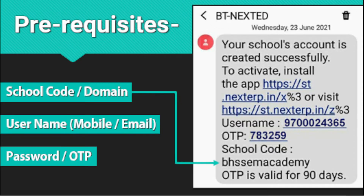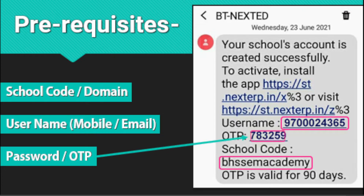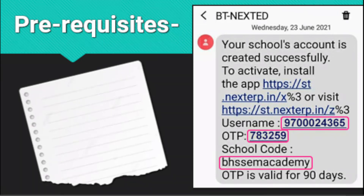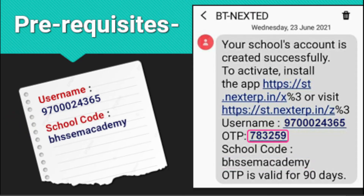So this is the school code, which is BHSSEM Academy. The username is your mobile number that you have given to register. The third information is the OTP, using which you will initially connect to create your parents' account. The next step is to take a paper and write down all three: the username, the school code, and the OTP that is sent along with the message.